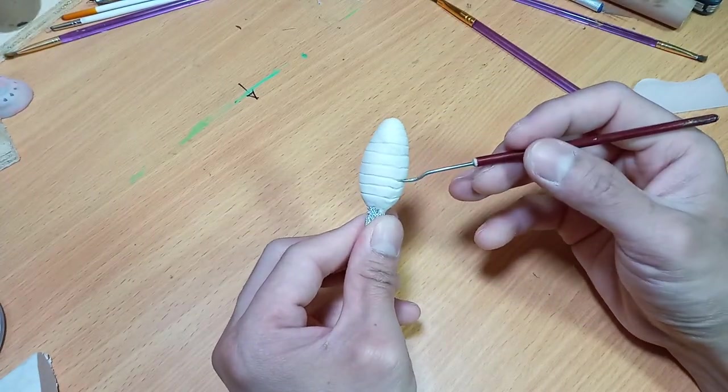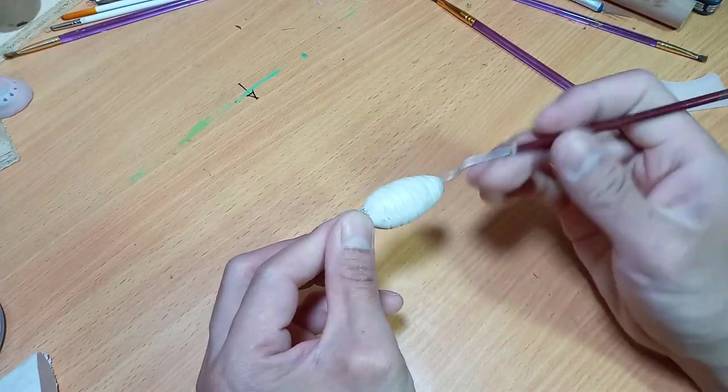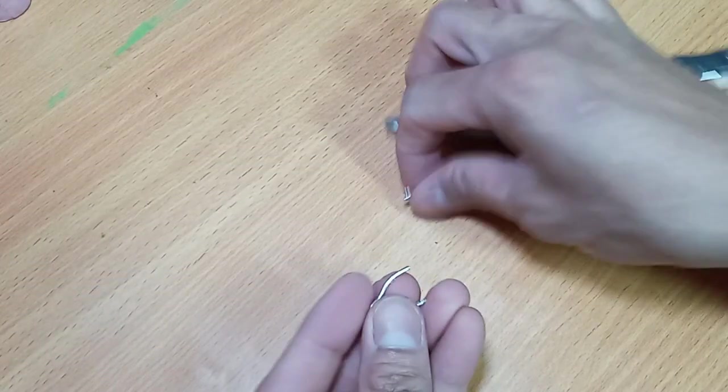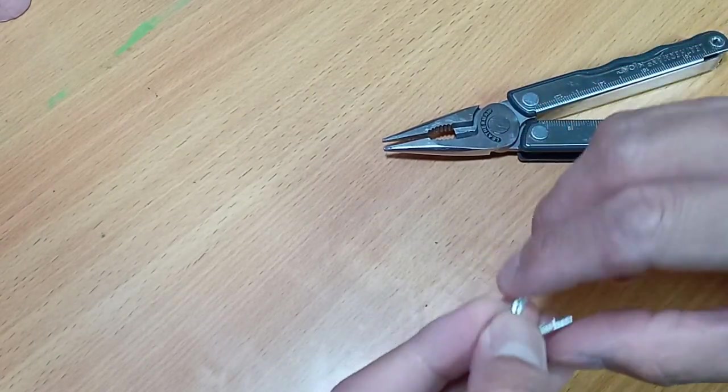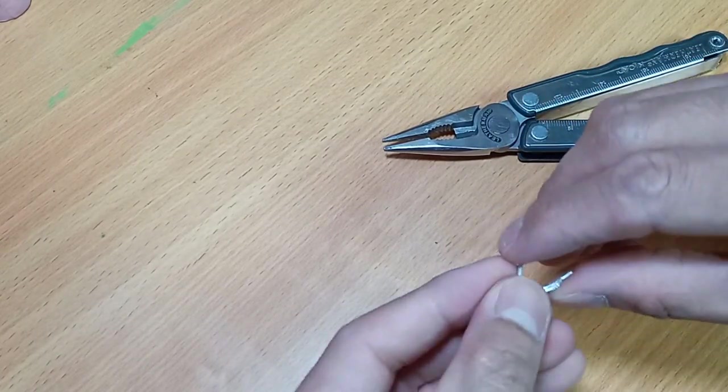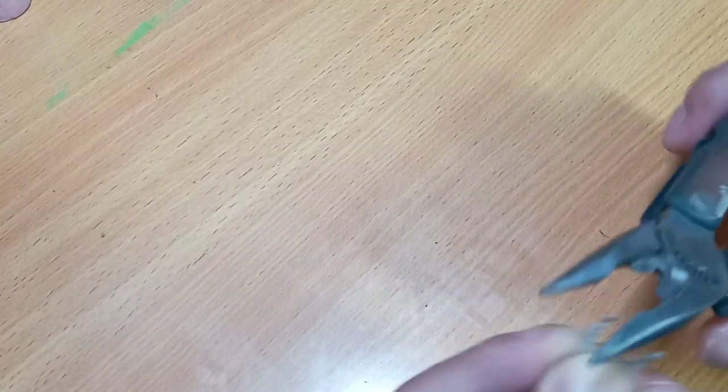Now we set aside the abdomen and proceed on sculpting its jaws. To start the jaw, I bend these aluminum wires in a U-shape form, trim each end to make them pointy, and smooth them by sanding.